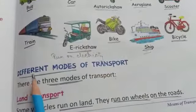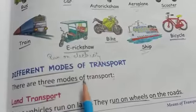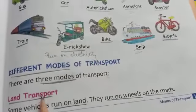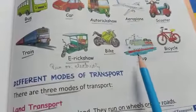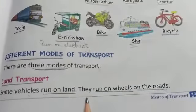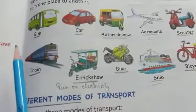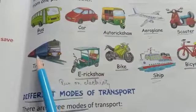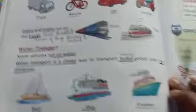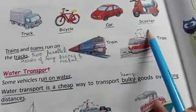Now we will learn about the different modes of transport. There are three modes of transport: land transport, air transport, and water transport. Some vehicles run on land — they run on wheels on the road. Examples are truck, bicycle, car, and scooter.